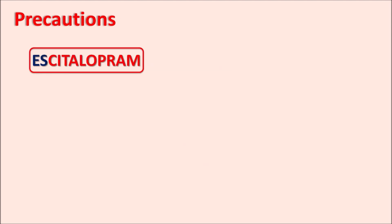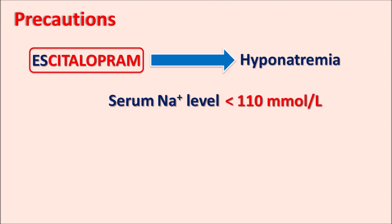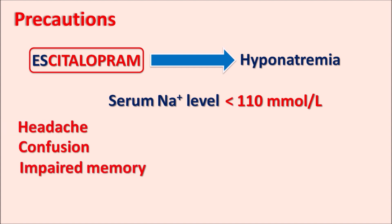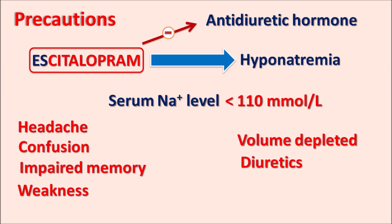Another important precaution is that escitalopram can produce hyponatremia — decreased sodium levels — with serum sodium levels reduced to less than 110 mmol/L. This condition produces symptoms such as headache, confusion, impaired memory, and weakness. These effects are mainly due to decreased action of antidiuretic hormone. When ADH is not working, it increases diuresis and loss of sodium, resulting in hyponatremia. Patients with volume depletion, those taking diuretics, and elderly patients are at higher risk.